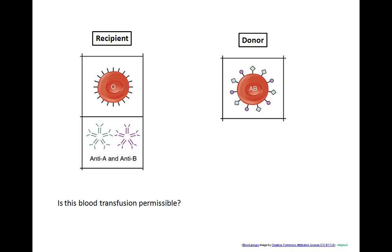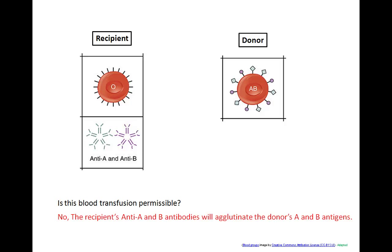Second example: type O blood is the recipient and type AB is the donor. Remember, it is the recipient's antibodies that agglutinate the donor's red blood cells. Does type O have an antibody against type AB's antigens? Yes, it does. So this transfusion is not permissible because the recipient's anti-A and anti-B antibodies will agglutinate the donor's A and B antigens.